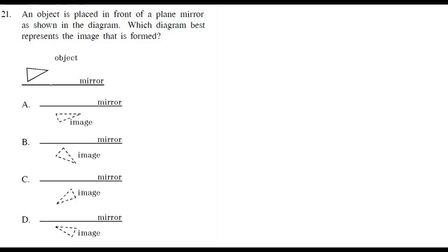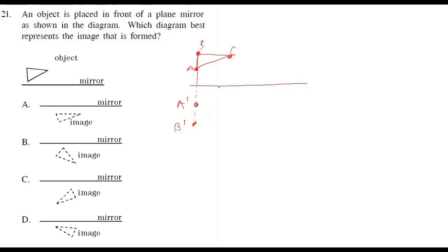Here again, a plane mirror is given with an object. Consider three points A, B, C on the object as three different objects. At the same distance behind the mirror, images A', B', C' are formed. Joining these gives the image, which is closer to option A as the correct answer. In the concave mirror, a parallel ray will definitely pass through focus, making B the correct answer.